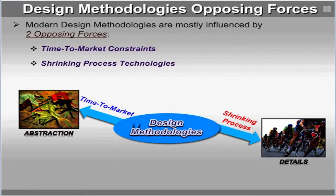Modern design methodologies are mostly influenced by two opposing forces: time-to-market constraints and shrinking process technologies. The first one will force a move to higher levels of abstraction to cope with the added complexity in design, and can already be seen in digital design, where cell-based design is rapidly moving to intellectual property reuse-based or block-based design methodologies.